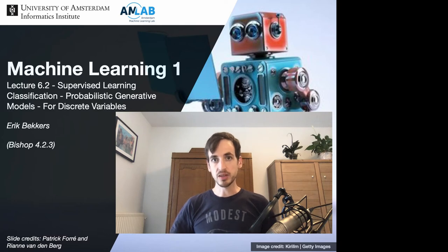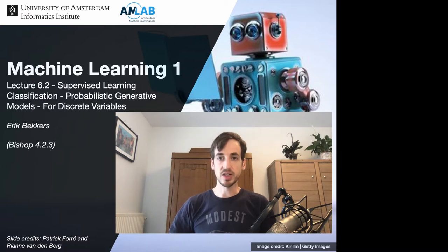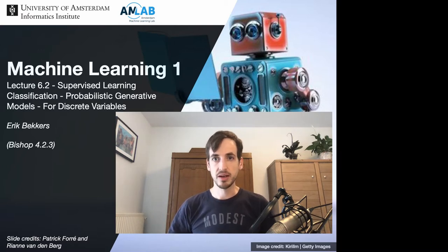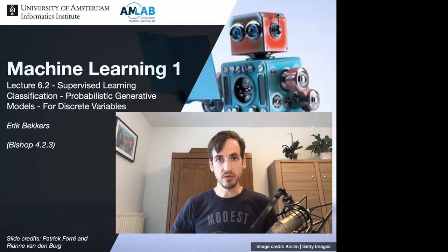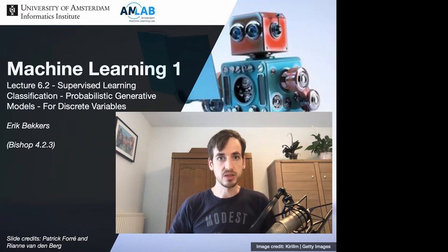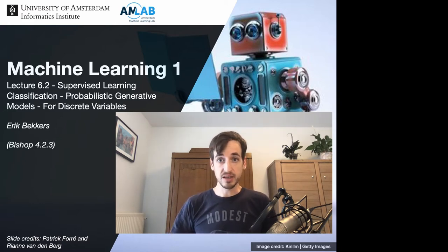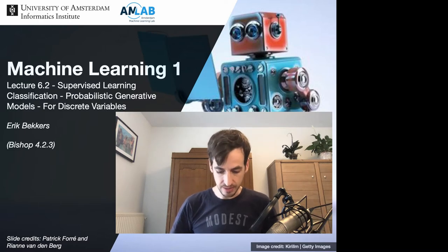In the previous video, I showed how to do probabilistic generative modeling, where we parameterize the class conditional distributions with Gaussians. Now in this video, I want to show that we're not limited to working with Gaussians, but we can actually use different parameterizations, different distributions as well. In fact, this is even necessary when we consider data which is no longer continuous, as we will see next.